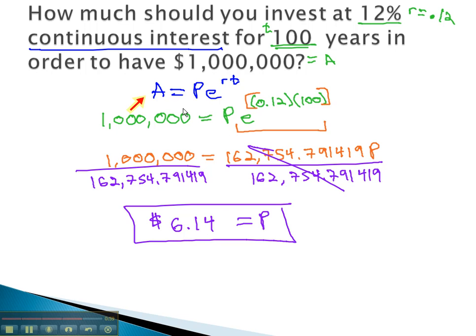By using the continuous interest formula and evaluating what we can, we can quickly solve the remaining equation to find the principle we are looking for.